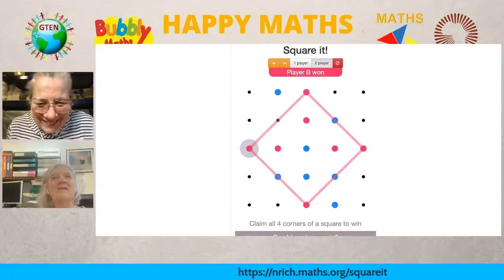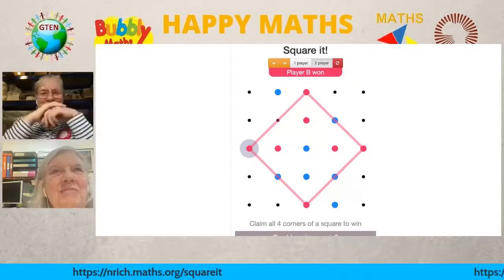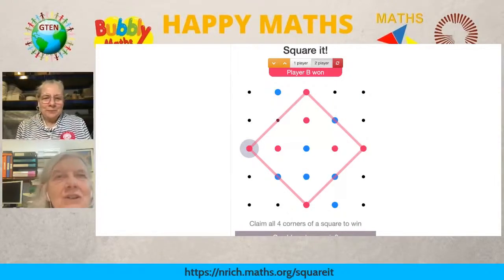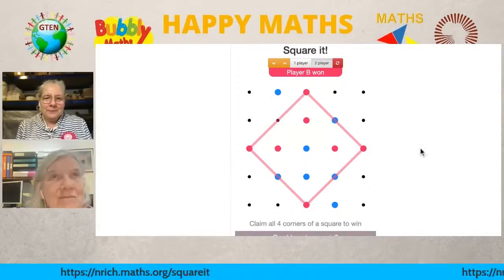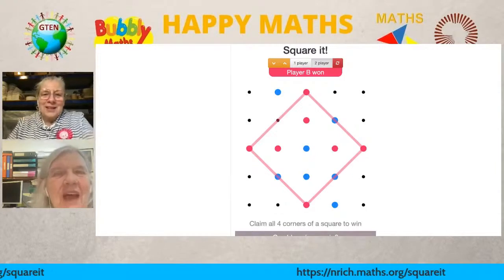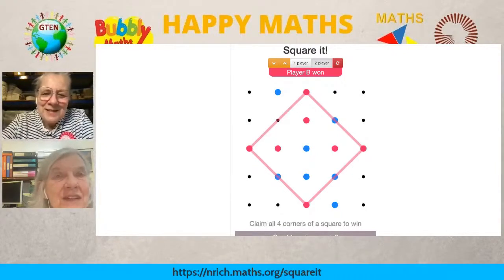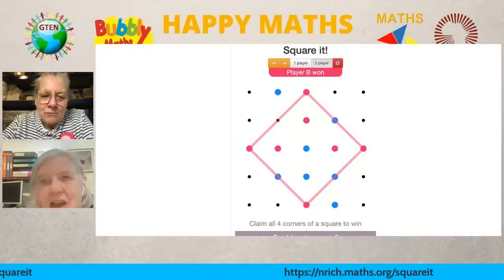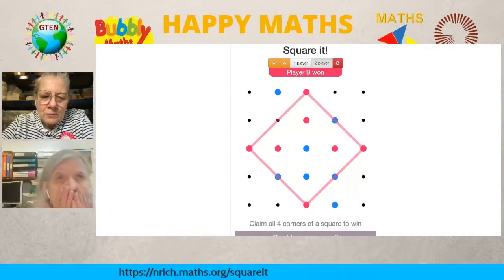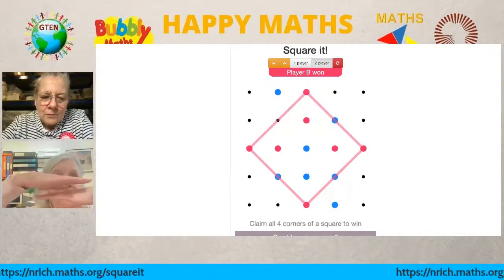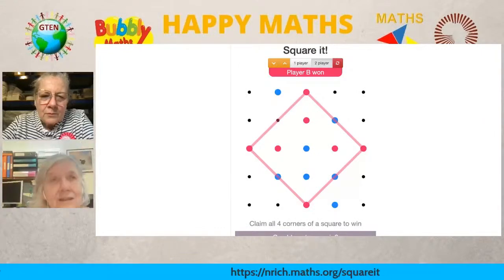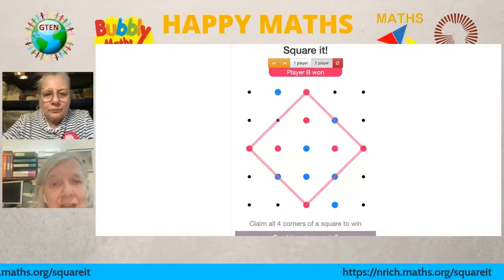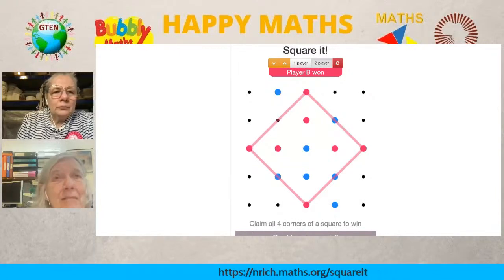Caroline wins! She's made a square — and it's a tilted square. This is what Caroline was talking about earlier: even though it's tilted, it is still a square. Many people will say 'that's not a square,' imagining a square must have horizontal and vertical edges. But of course, you can have a tilted square. We call it a tilted square, and it's a surprise to many people.